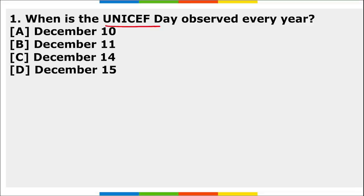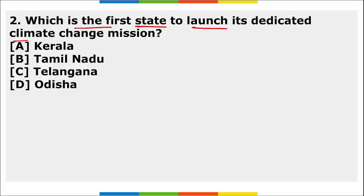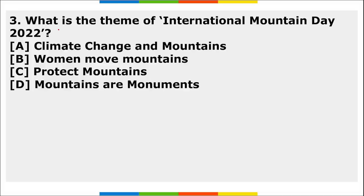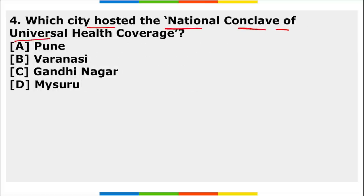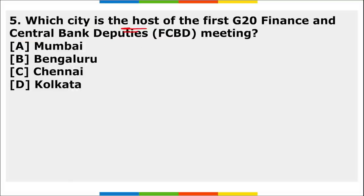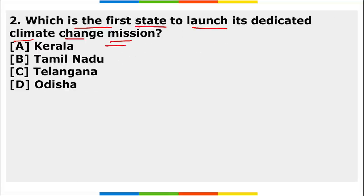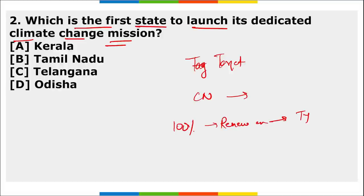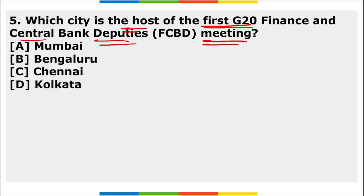Homework questions: First, when is UNICEF Day observed? Second, which is the first state to launch its dedicated climate change mission? Third, what is the theme of International Mountain Day 2022? Fourth, which city will host the National Conclave on Universal Health Coverage? Fifth, which city is hosting the first G20 Finance and Central Bank Deputies meeting? Also tell us: which is the first state and what is the target year for becoming carbon neutral and shifting 100% to renewable energy?